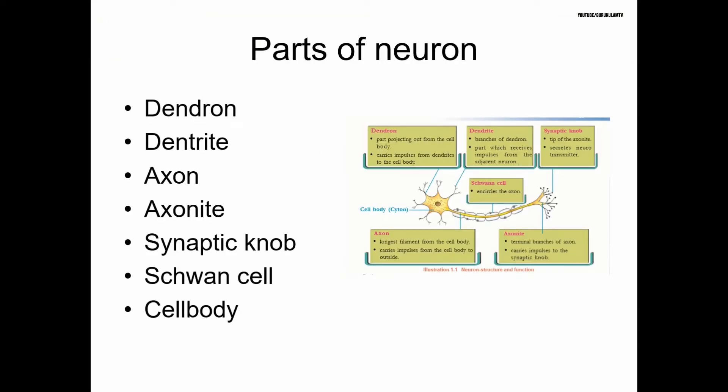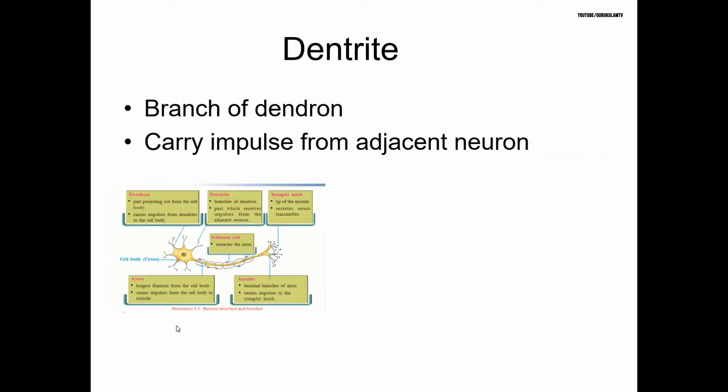The parts of a neuron include the axon and dendrites. The first part is the dendrite. Dendrite comes from the word 'dendron,' meaning branch.